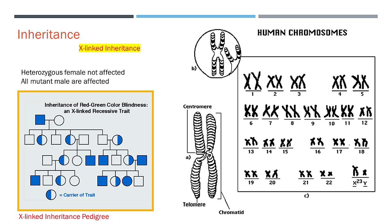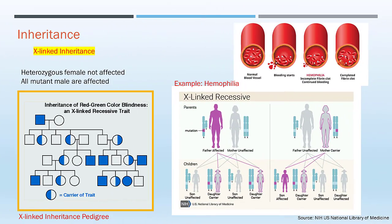X-linked recessive inheritance is a mode of inheritance in which a mutation in a gene on the X chromosome causes the phenotype to be always expressed in males and in females who are homozygous for the gene mutation. In other words, all males with a mutant or abnormal copy of the gene are affected, whereas heterozygous females are not affected. A typical example is hemophilia, which is an inherited bleeding disorder in which the blood does not clot properly. This can lead to spontaneous bleeding as well as bleeding following injuries or surgery. Blood contains many proteins called clotting factors that can help to stop bleeding.